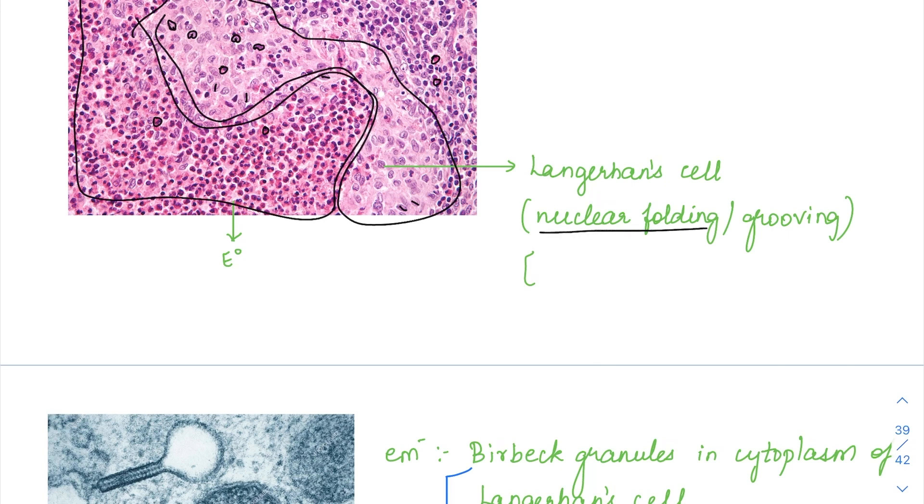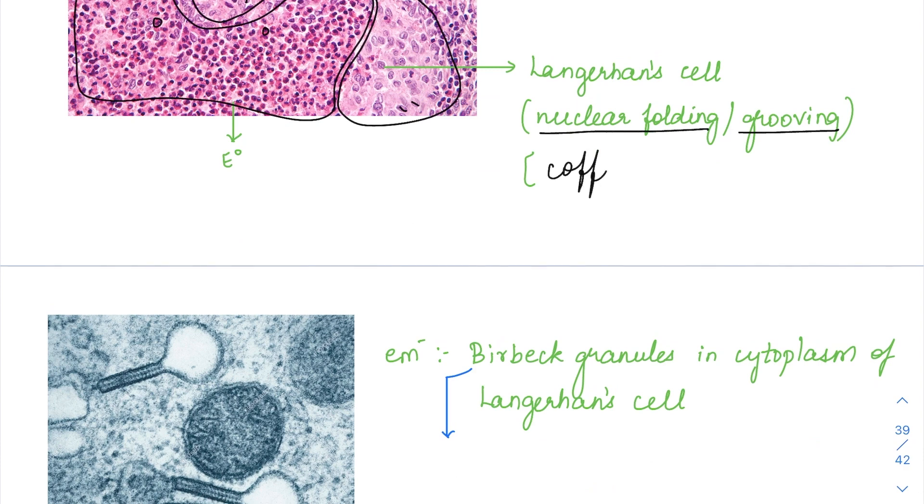Langerhans cell is going to have nuclear folding along with the presence of nuclear grooving. Whenever nuclear groove is present, it is going to give a coffee bean appearance. It is called as coffee bean nuclei. Coffee bean nuclei kind of cells in the background of eosinophils, you will have to think about a LCH in a child usually.